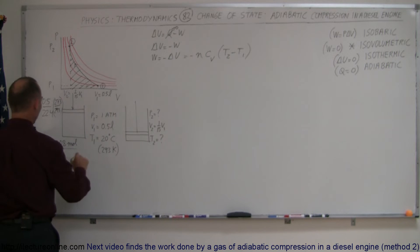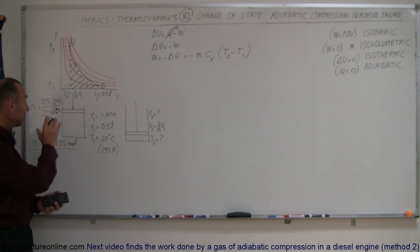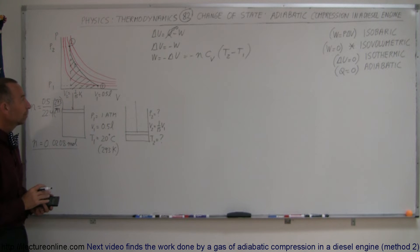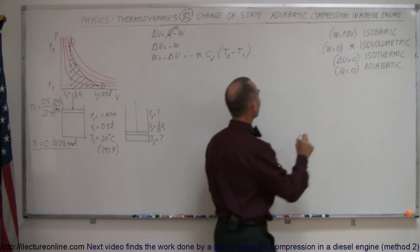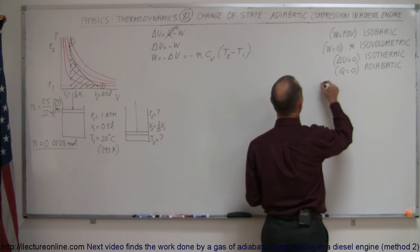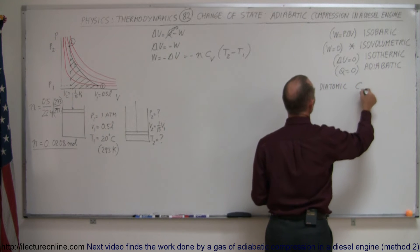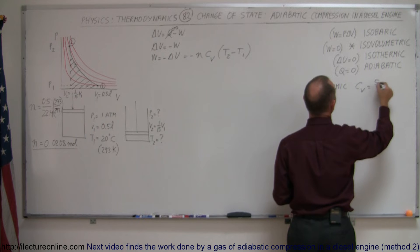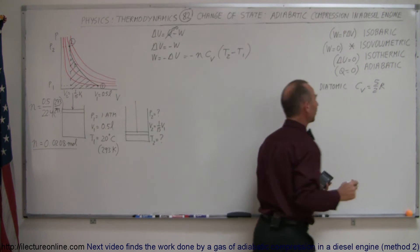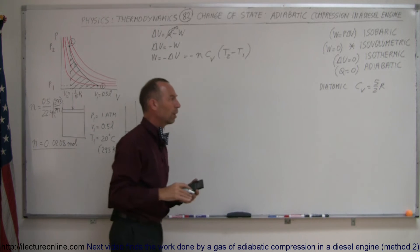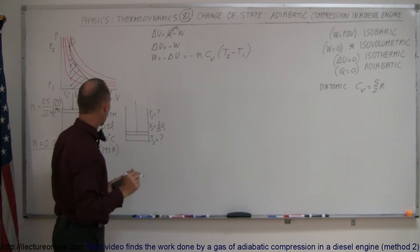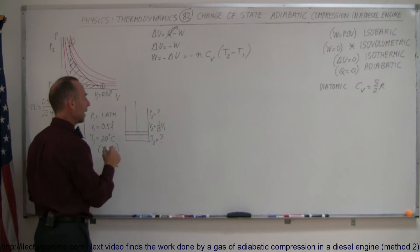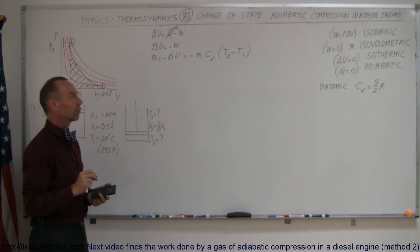Now we have the number of moles in the cylinder being compressed. We also know Cv: for a diatomic molecule, Cv equals 5/2 R. For reference, for a monatomic gas it's 3/2 R; for diatomic it's 5/2 R. We know T1, the initial temperature of 293 Kelvin. The remaining unknown is T2, the final temperature.